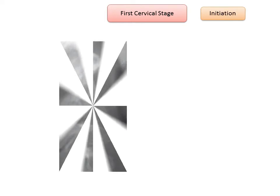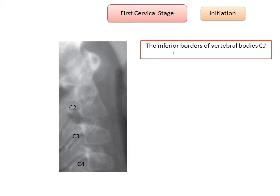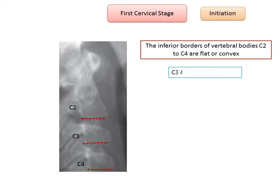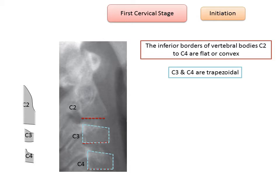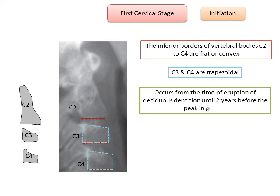In the first cervical stage, CS1, the inferior borders of the vertebral bodies C2 to C4 are flat or sometimes slightly convex; a notch of at least one millimeter in depth may be present. The third and fourth cervical bodies are trapezoidal in morphology, assuming the shape of a typical wedge of cheese, with the posterior border of the vertebral body taller than the anterior border and the superior surface sloping forward and downward. This stage occurs from approximately the time of eruption of the deciduous second dentition until about two years before the peak in skeletal growth.